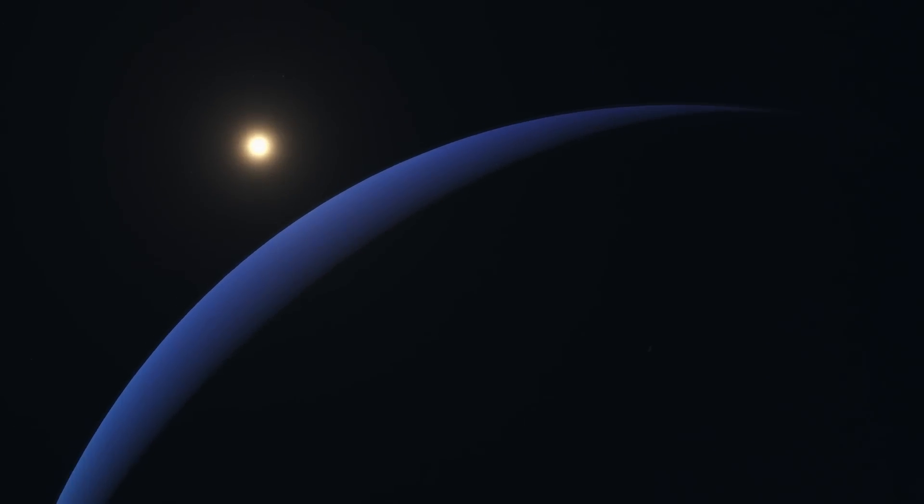In our solar system, planets move more slowly as they get farther from the Sun. For example, Mercury completes an orbit around the Sun in 88 days, while Neptune takes about 165 years to complete one revolution. Hence, the rotation curve of our solar system looks something like this.